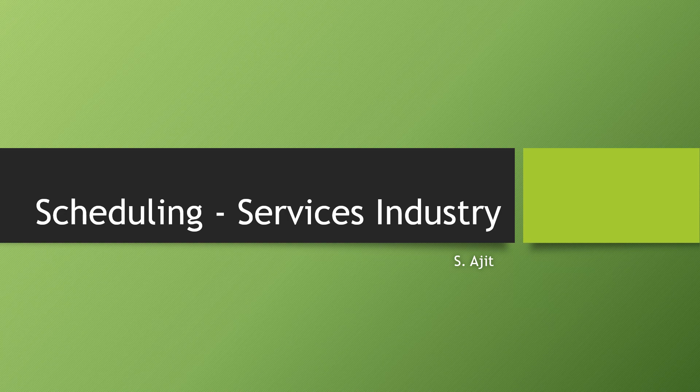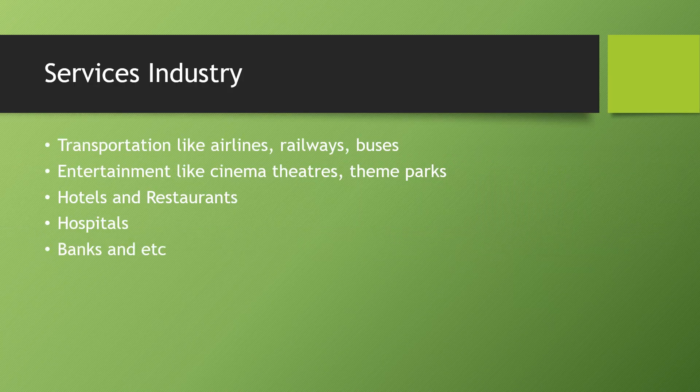Scheduling of services is our next topic. The services industry is a little different from manufacturing industry. In manufacturing, machines and jobs given by customers are scheduled in a particular sequence and processed in order. In the services industry it is not like that. Examples of services industries include transportation — airlines, railways, and bus — entertainment like cinema theaters, theme parks, hotels, restaurants, hospitals, banks, and other services.